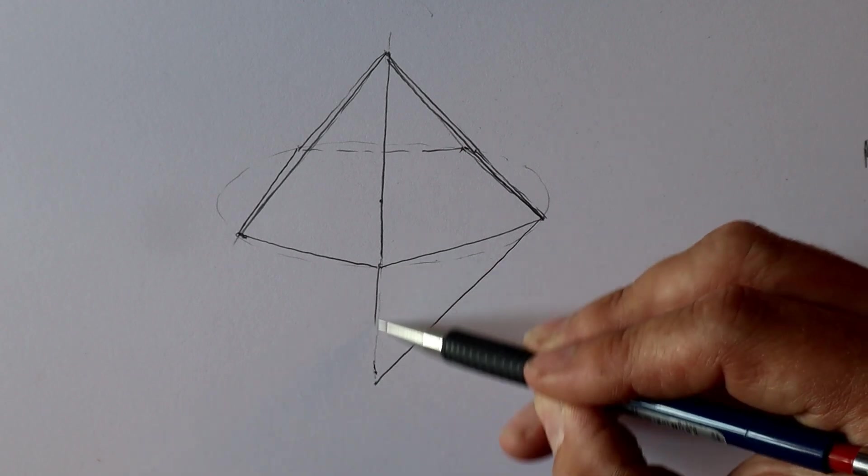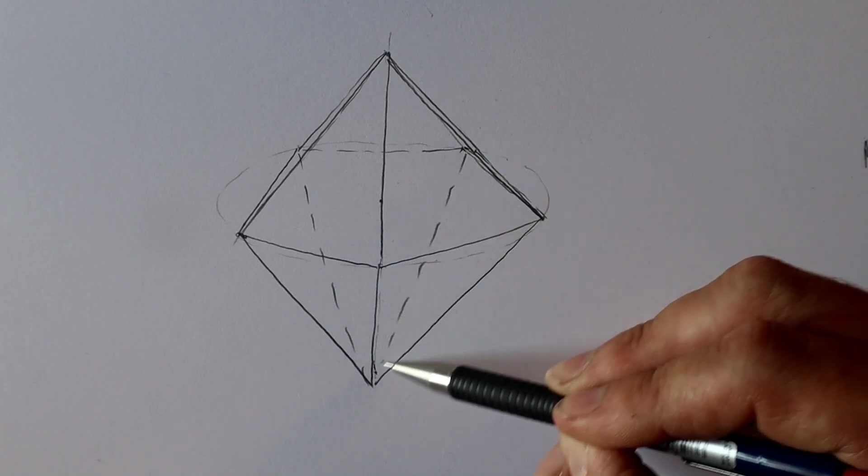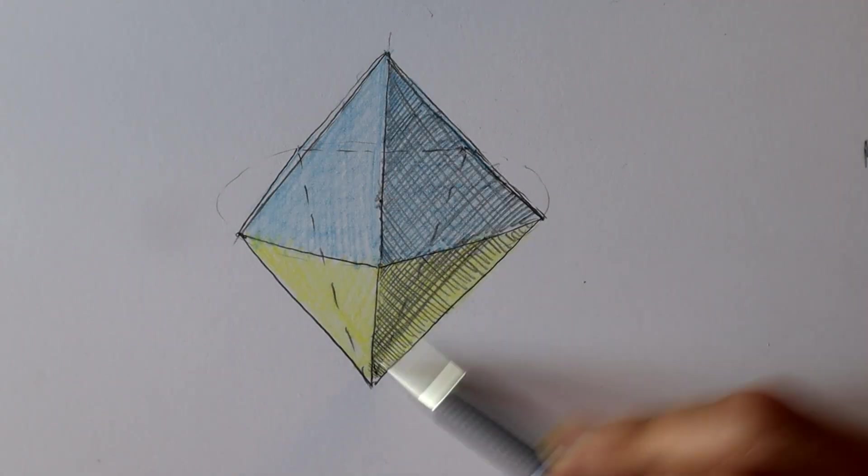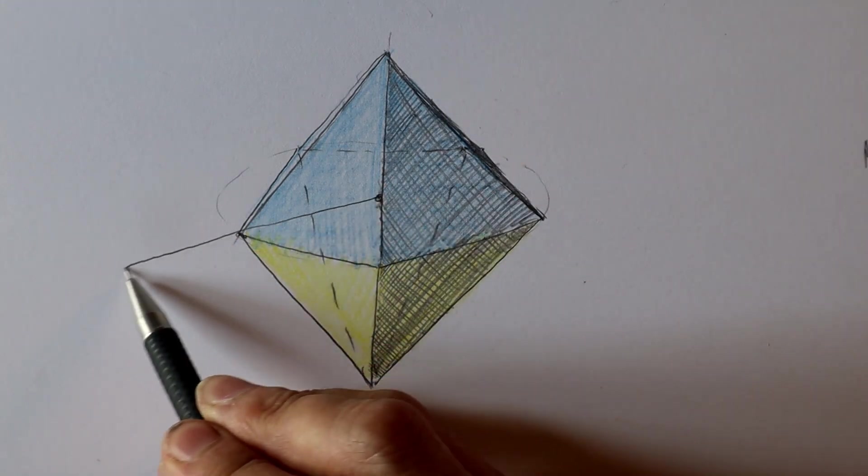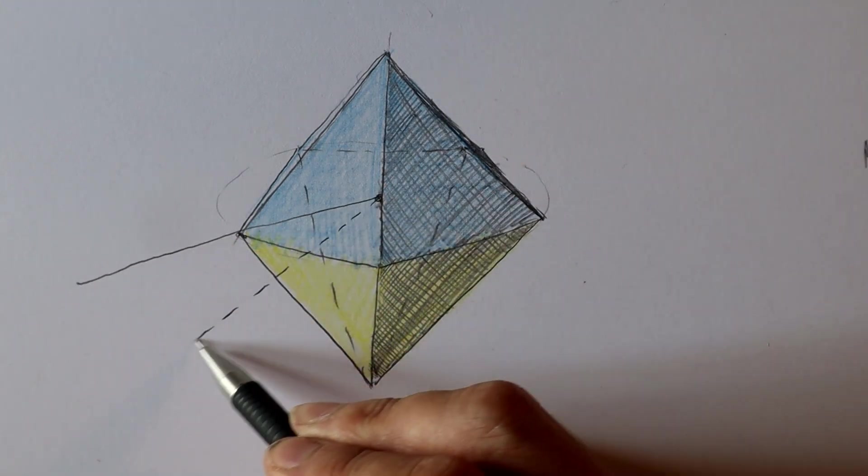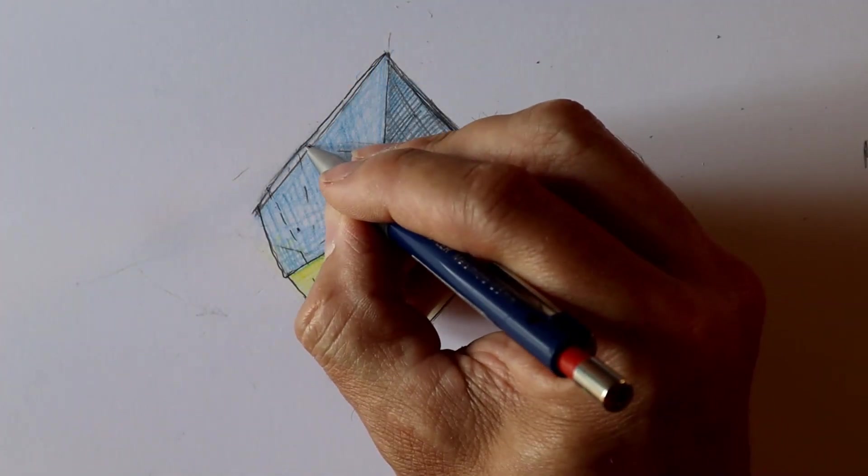But there is an infinite number of polyhedrons with this property like the symmetrical double pyramids. These are therefore not counted among the Catalan solids. Likewise the twisted double pyramids. These are called trapezohedrons.